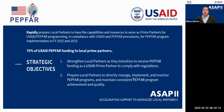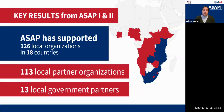ASAP stands for Accelerating Support to Advanced Local Partners. The goal of ASAP is to prepare local partners to have the capabilities and resources to serve as prime partners for USAID and PEPFAR programming. Key strategic objectives include strengthening local partners as they transition to receive PEPFAR funding and maintaining consistent quality and achievement. ASAP has supported a total of 126 local organizations in 18 different countries, mostly in sub-Saharan Africa. 113 were local partner organizations and 13 were local government partners.